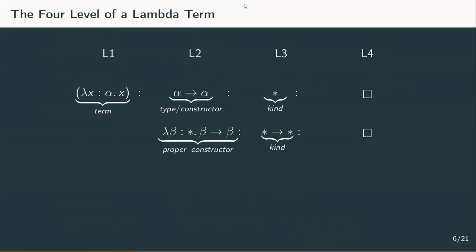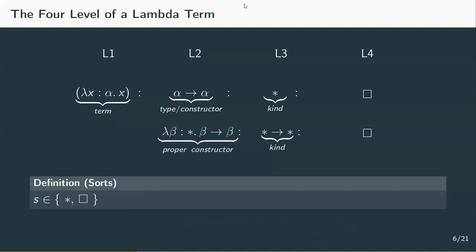To make reasoning about our system easier, we're going to refer to the two symbols star and box as sorts, and use the letter s. So if you see a lowercase s in the derivation rules, this means s is either star or box. We're mainly doing this to simplify the derivation rules. This notion is also a preparation for the lambda cube, where we want a uniform definition for all systems and we're going to need these sorts for that.